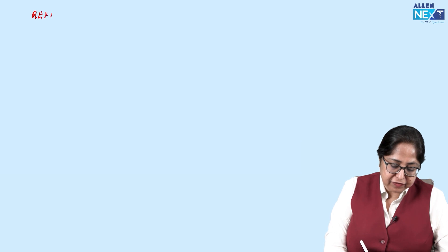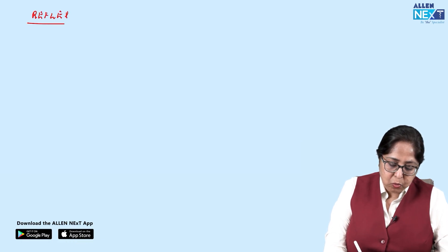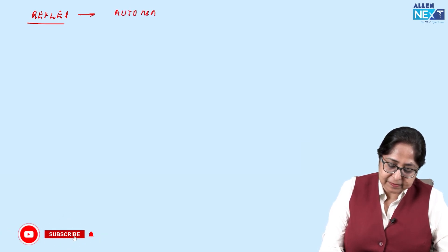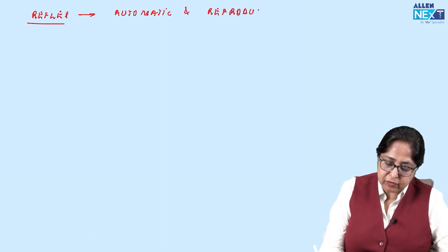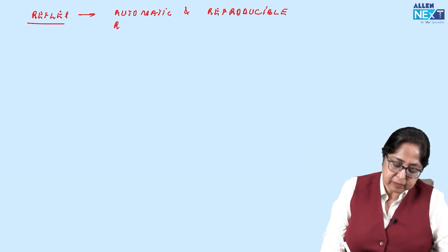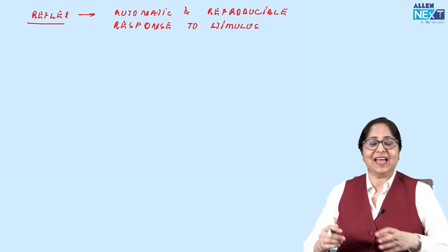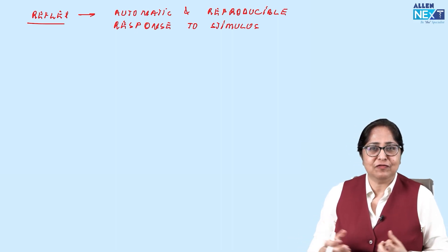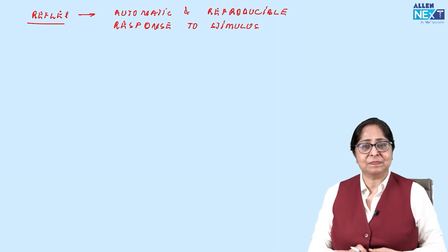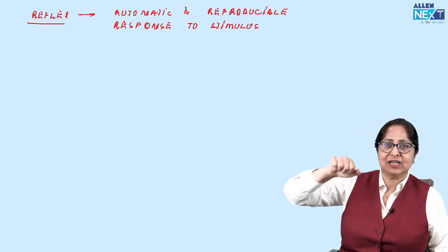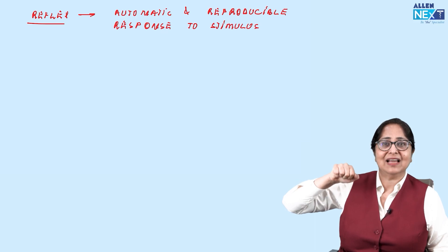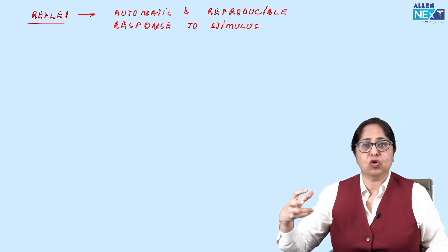Let's define a reflex. What is a reflex? A reflex is an automatic and reproducible response to a stimulus — automatic and reproducible. The flexor withdrawal reflex is a classic example: when you touch something hot, there is an immediate flexion of that particular limb, which is called the flexor withdrawal reflex.